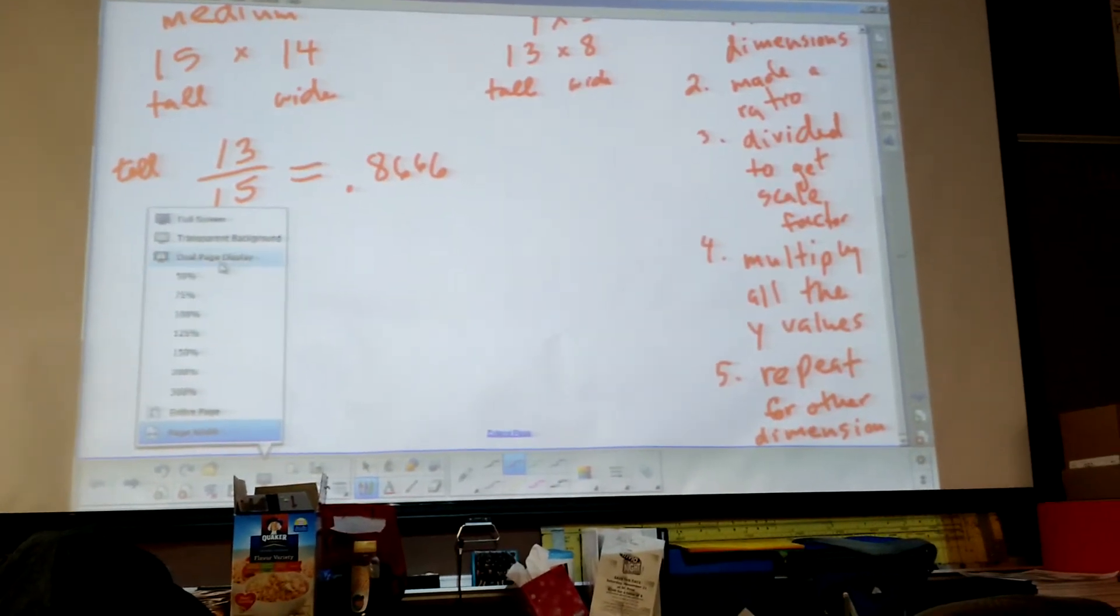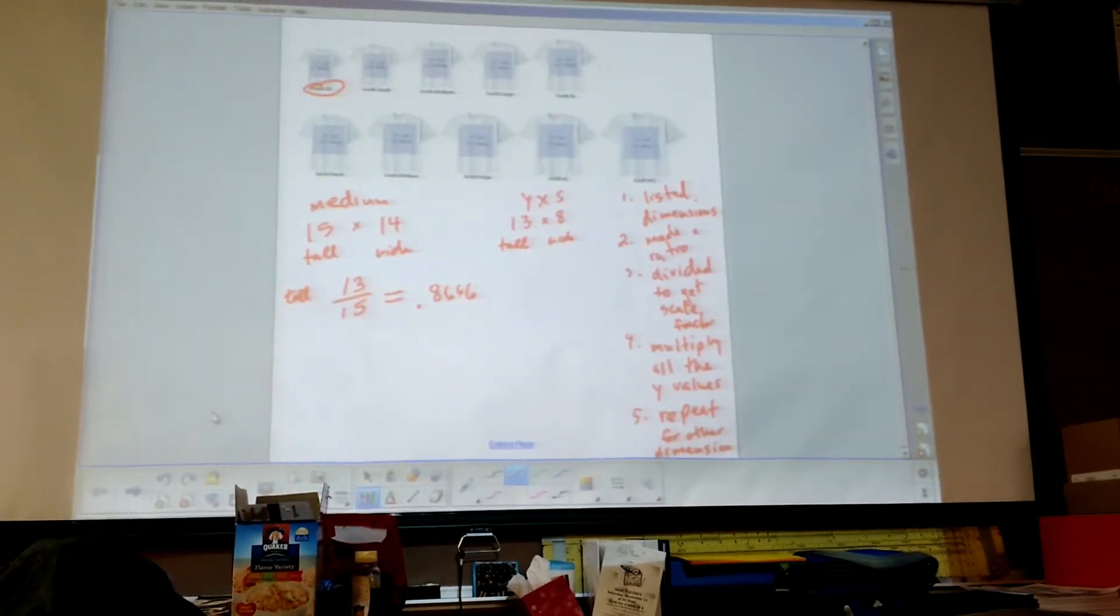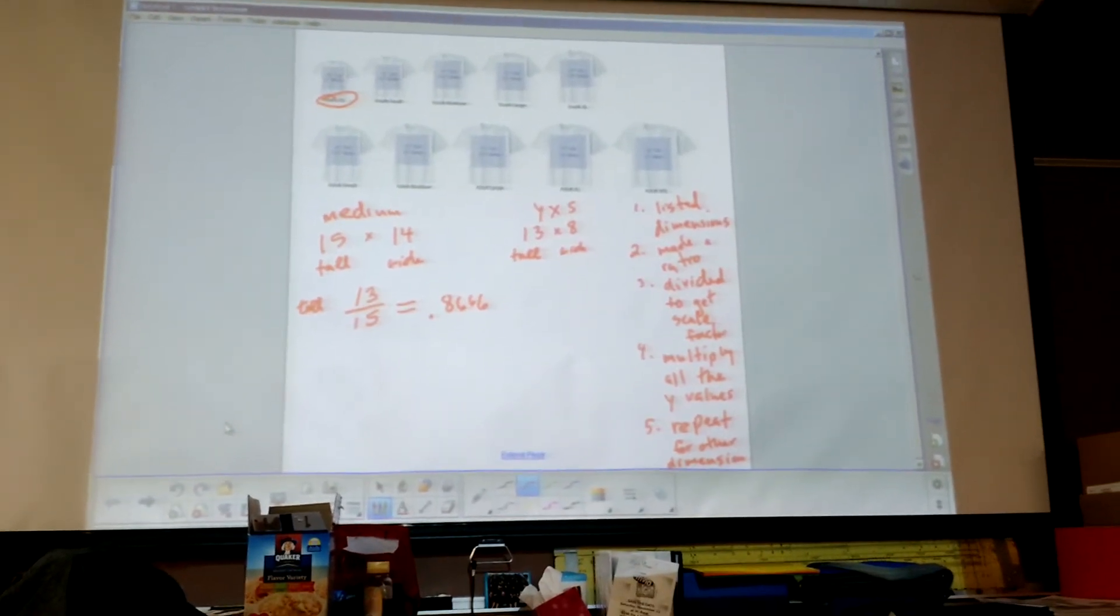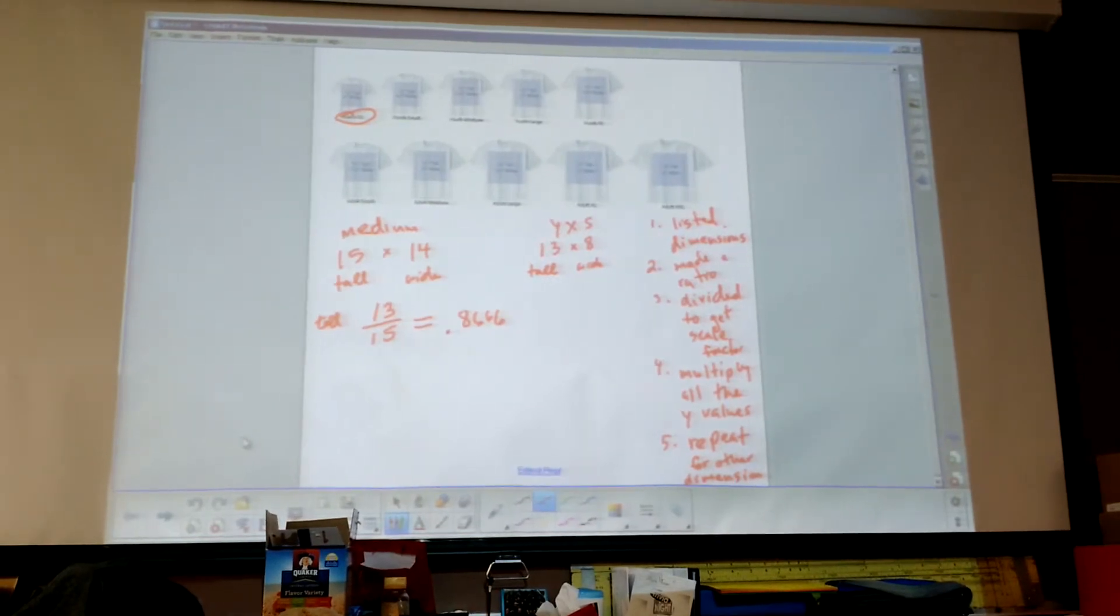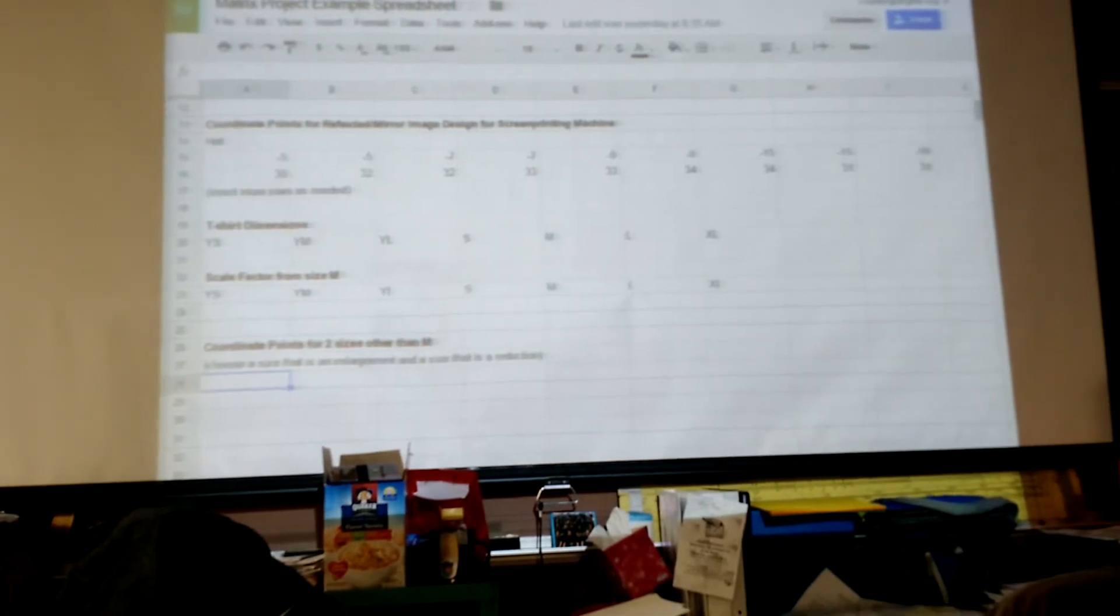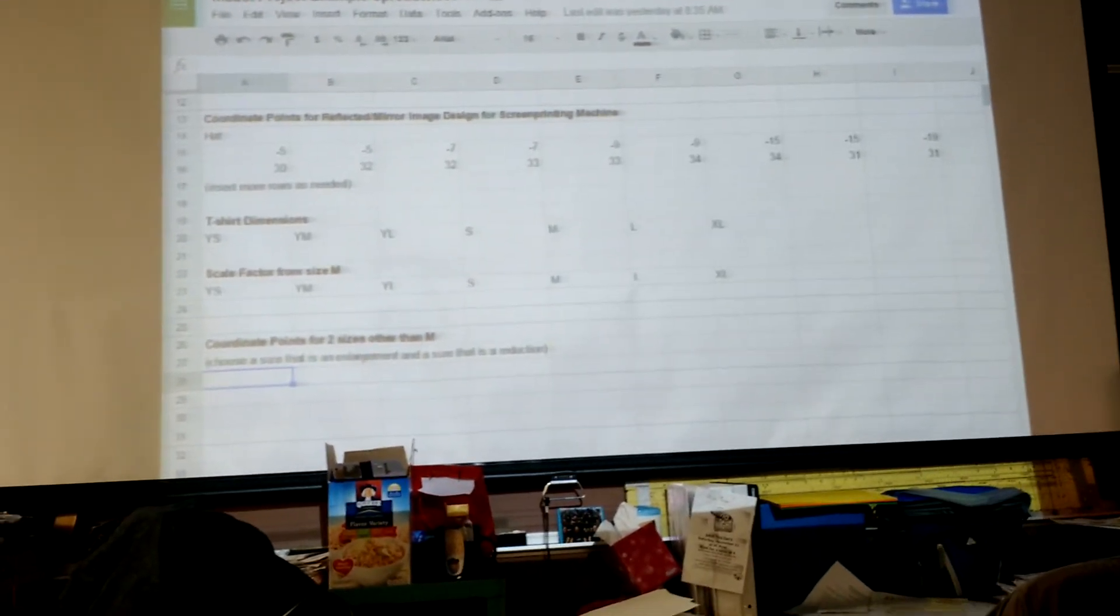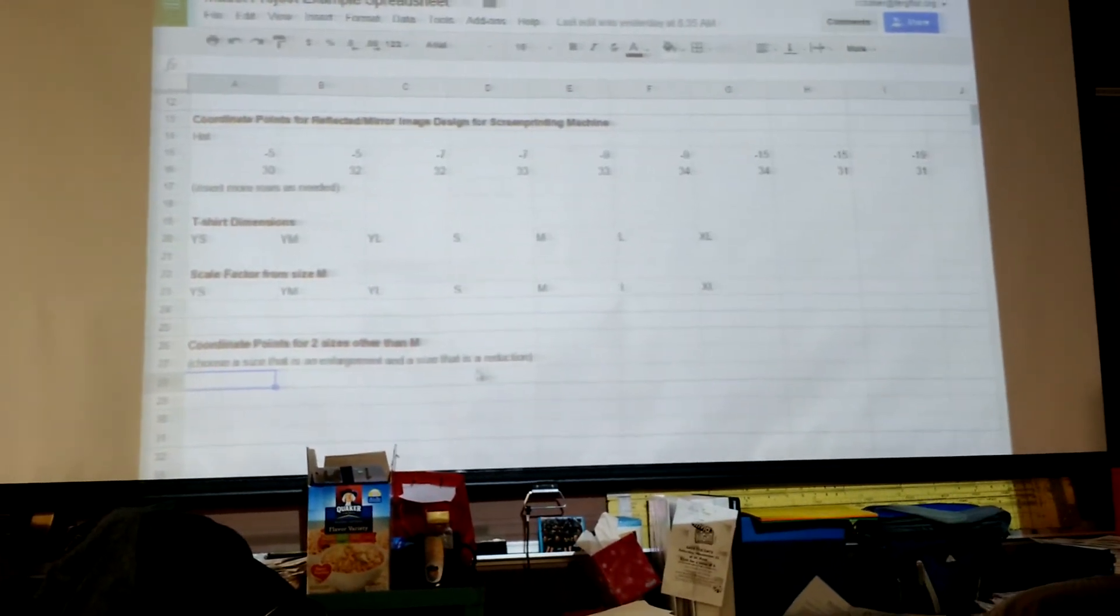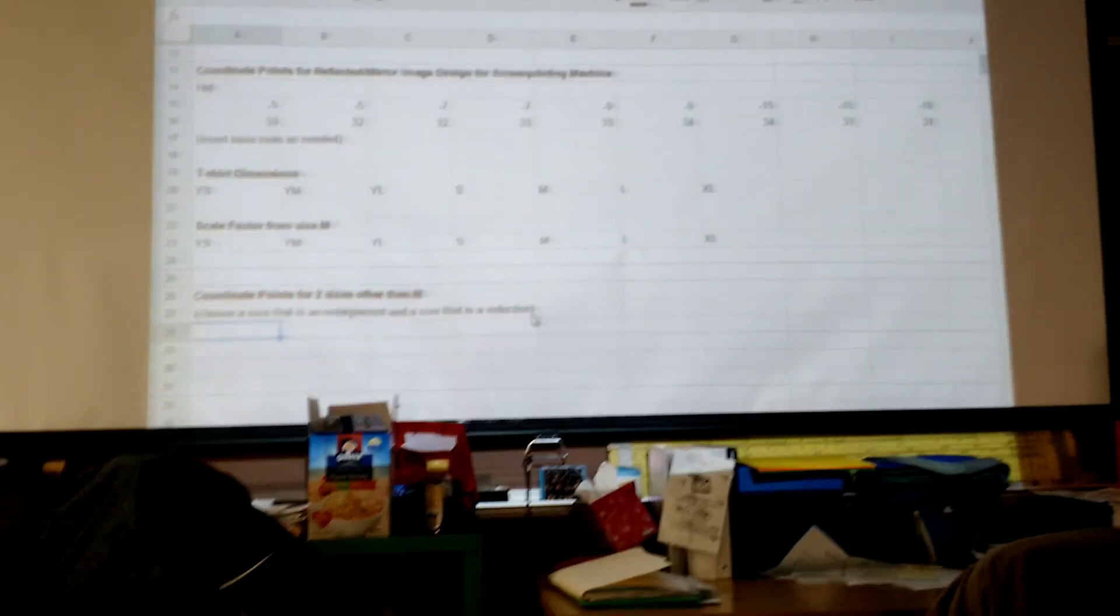I'm going to show you real quick how to do that in the spreadsheet. In the spreadsheet, it says coordinate points for two sizes other than medium. I wrote, choose a size that would be an enlargement and a size that would be a reduction. What are the sizes that would be smaller than medium?